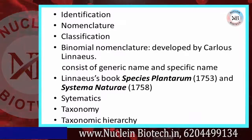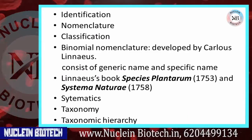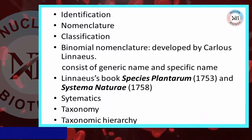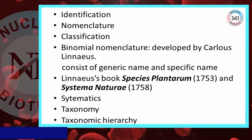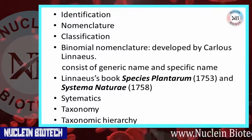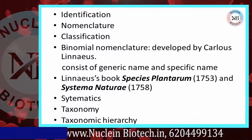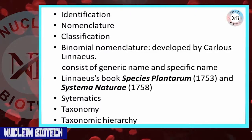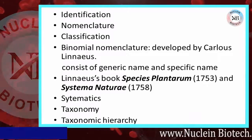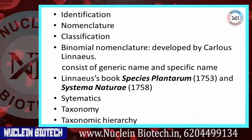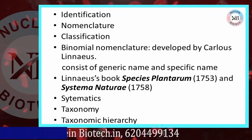Binomial nomenclature was coined by Linnaeus. For example, Homo sapiens — here 'Homo' is the generic name and 'sapiens' is the specific (species) name.